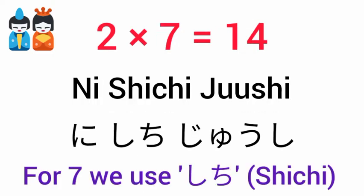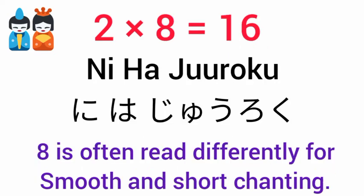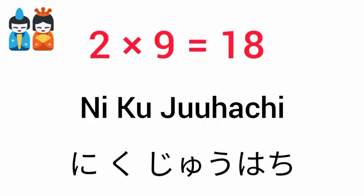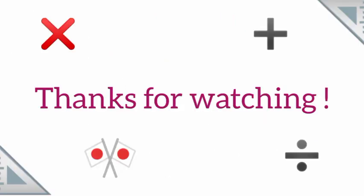For 7, we use 'shichi'. 2×8 is 16. 8 is often read differently for smooth and short chanting. 2×9 is 18. Thank you.